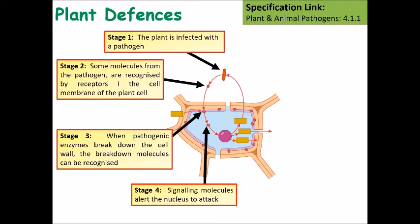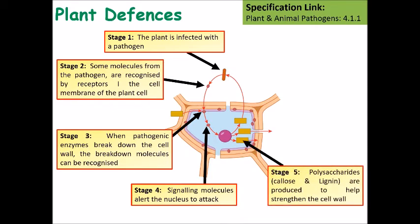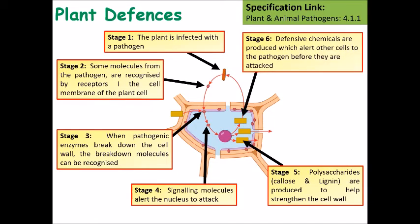The nucleus can then cause the transcription of DNA into RNA, which goes to ribosomes and is translated into polysaccharides such as callose or lignin, which are produced to help strengthen the cell wall. It can also be transcribed into defensive chemicals which either act on the infection inside the cell or are secreted outside the cell to kill infectious agents — the pathogens — before they enter.